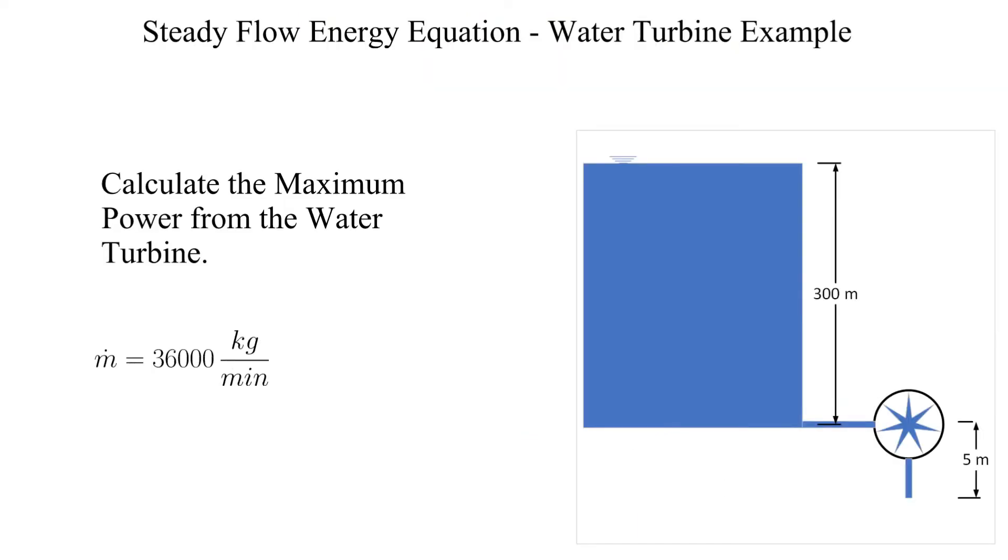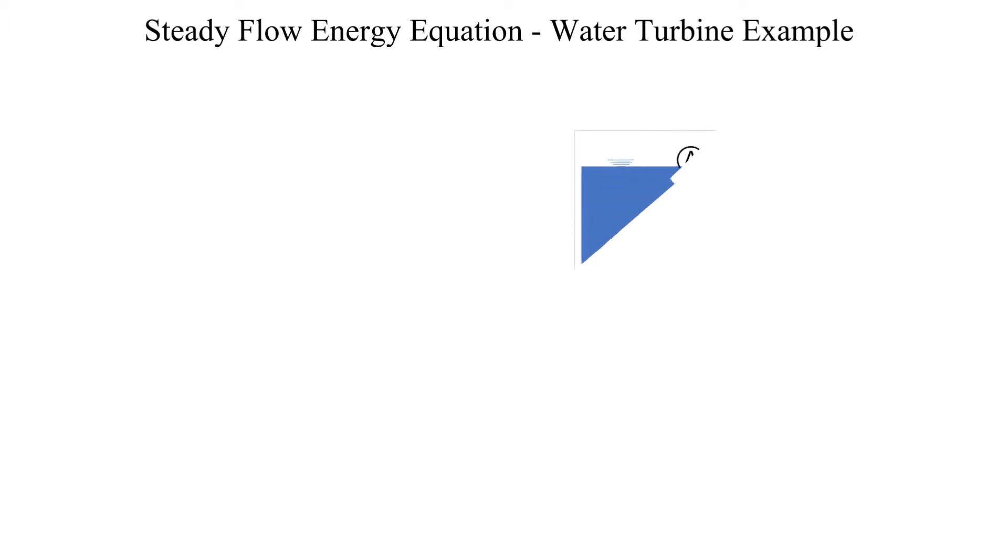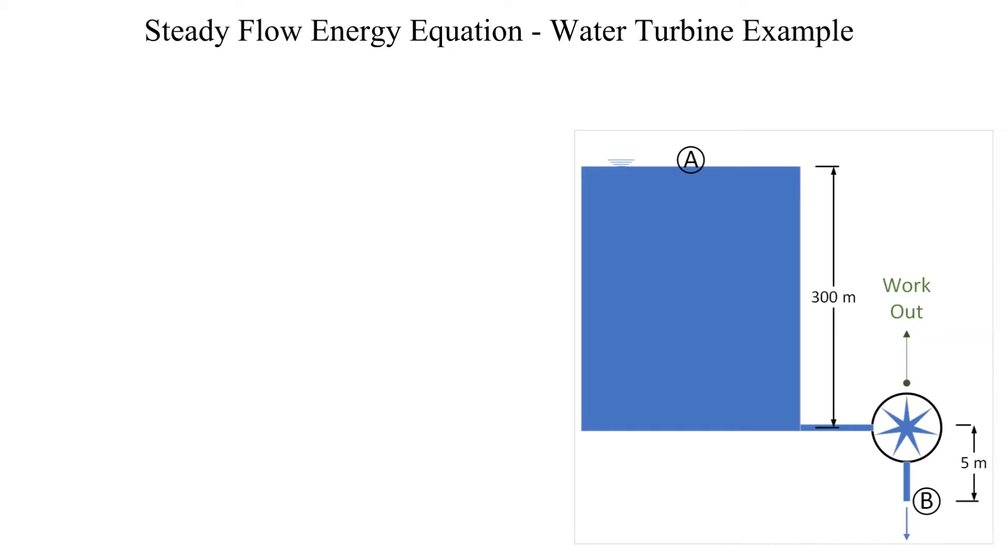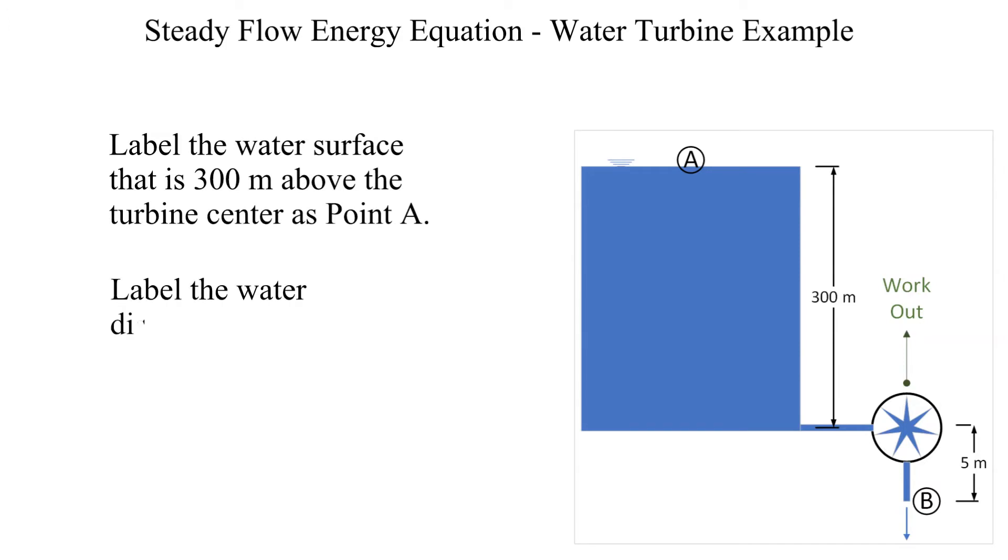The water turbine is supplied with water from a large tank at a rate of 36,000 kilograms per minute. The center of the turbine is 300 meters below the surface of the water. The discharge of the turbine is 5 meters below the center of the turbine. These points are labeled as alpha and bravo respectively.